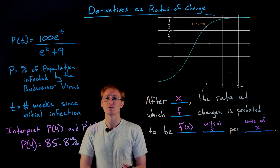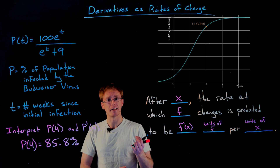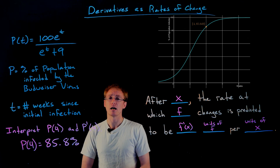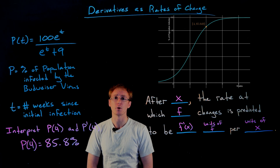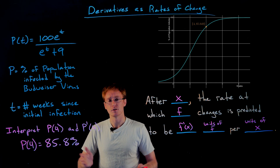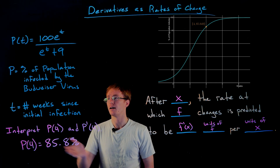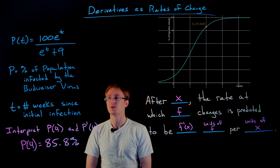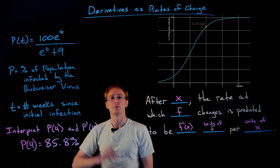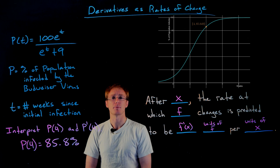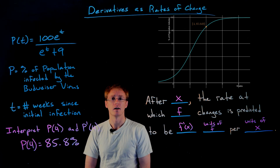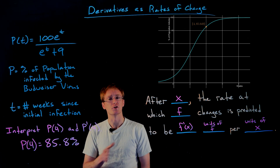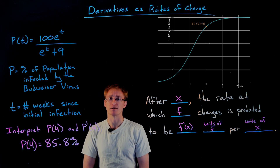We can see this function grows exponentially at first, but as time goes on it plateaus. This is an example of a logistic growth function, used to model things like population growth or infection rates — things that increase exponentially but can't increase indefinitely because there's usually some cap stopping them from going off to infinity.